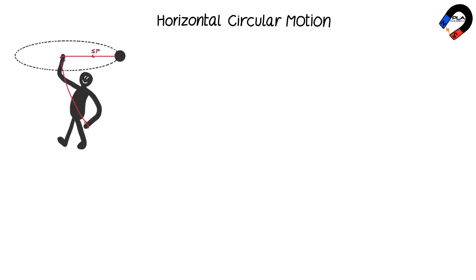Horizontal circular motion: for a ball attached to a string moving in horizontal circular motion, the resultant force, or centripetal force, is provided by the tension in the string.